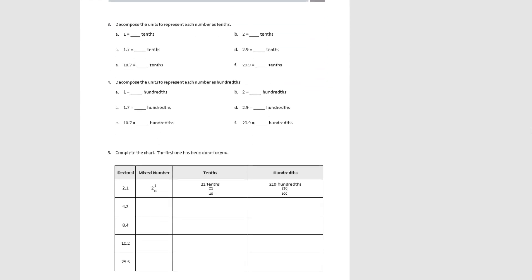Moving on, we continue to decompose but this time without the place value charts. For number three: one equals ten tenths; two equals twenty tenths; one and seven tenths — the one is ten tenths plus seven more gives seventeen tenths; the next would be twenty-nine tenths. Ten would be a hundred tenths, plus seven gives a hundred and seven tenths. The last gives two hundred and nine tenths.